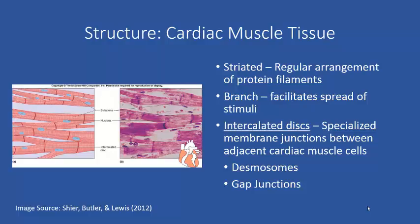Those darker lines are not striations — they are intercalated discs. Intercalated discs are different from striations in that they are not due to a regular arrangement of protein filaments. They are actually the place where two cardiac muscle cells meet and join — specialized membrane junctions between adjacent cardiac muscle cells.